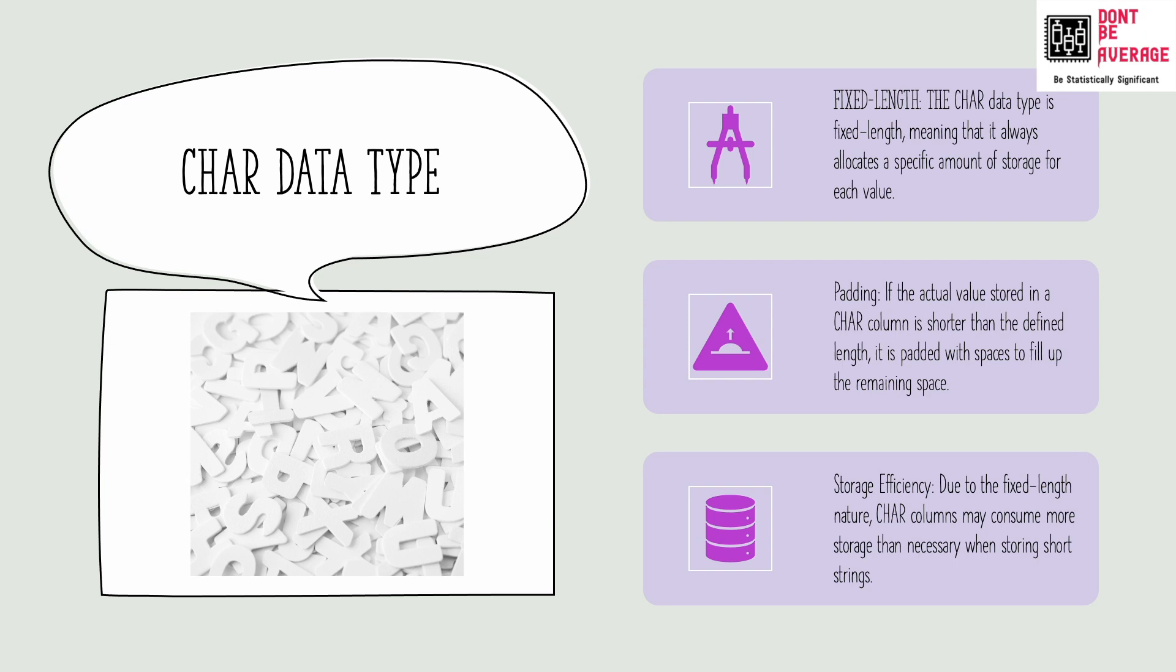In case of char data type, it always allocates a specific amount of storage for each value. And if the actual value stored in the column is shorter than the desired length, then it is padded with spaces to fill up the remaining space. We'll also see an example right after this to make all these points very clear. Due to this fixed length nature, the char columns may consume more storage than necessary since it is adding spaces which were not necessary just to maintain the fixed length.